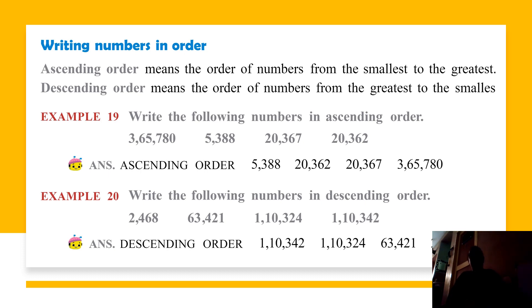Now, write the following numbers in descending order. Descending order means decreasing order — writing numbers from the greatest to the smallest. First, compare by counting the number of digits. The first number has 4 digits, the second has 5 digits, the third and fourth have 6 digits. The 6-digit numbers are 1,10,324 and 1,10,342. Among these, 1,10,342 is greater, so we write it first, then 1,10,324. Next comes the 5-digit number 63,421, and finally 2,468.